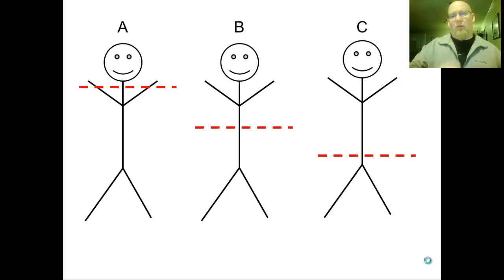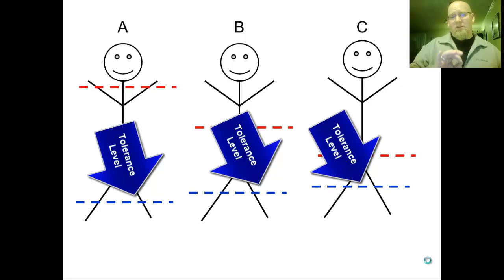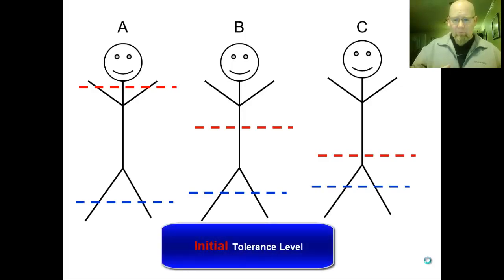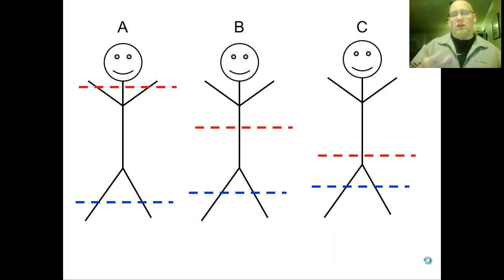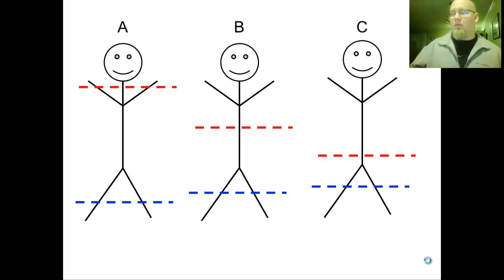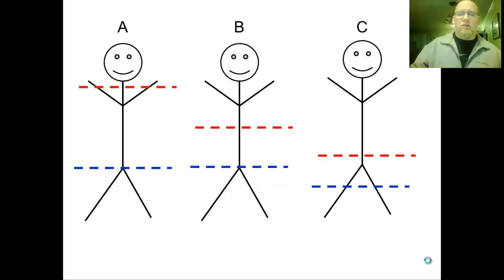Person A probably doesn't have a family history of addiction, so their trigger level is a lot higher, and B is somewhere in the middle. Now let's add tolerance level — our sensitivity to a particular drug. Person A's initial tolerance level is lower than Person C's. Tolerance level can raise and lower based on the choices we make; the more we use a substance, the higher our tolerance level goes. Person C is already born with a higher initial tolerance level than Person A — that's genetically set. As all three people start using at the same rate, all their tolerance levels raise.